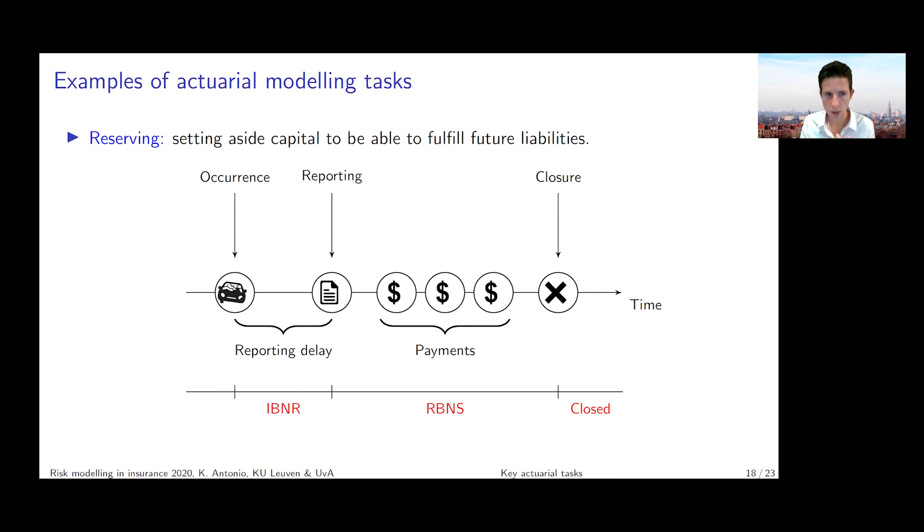So this reporting delay is an important component here. Then what the insurance company is going to do is the company will pay for the claim, pay for the loss with a couple of payments or loss installments until the claim eventually settles or closes. What we need to do as an insurance company is make sure, also for those claims which are ongoing at the present moment which are not finished yet, to have enough capital aside in order to compensate our policyholders for their future loss installments related to those claims that happened in the past.